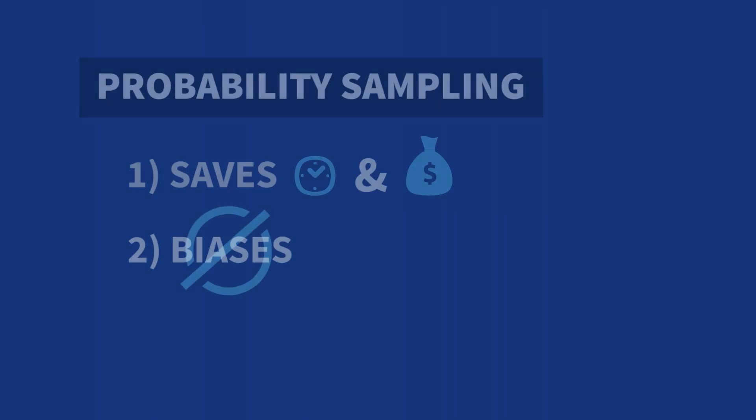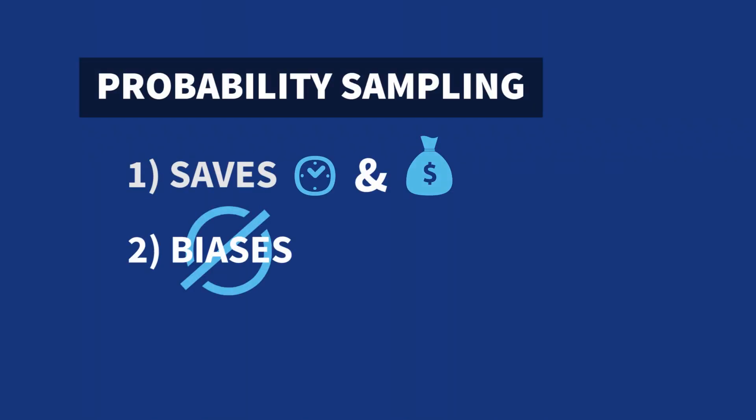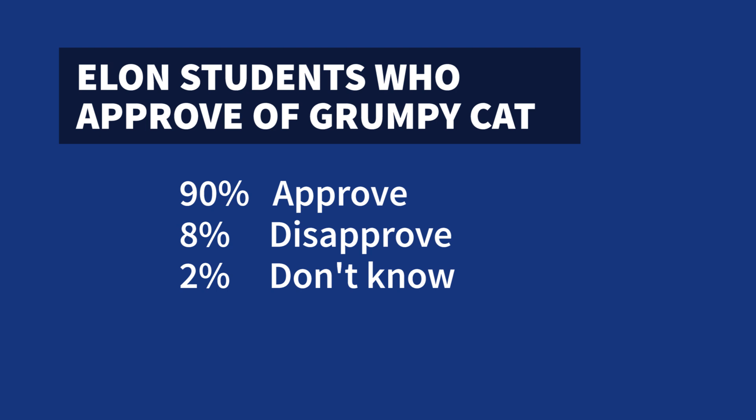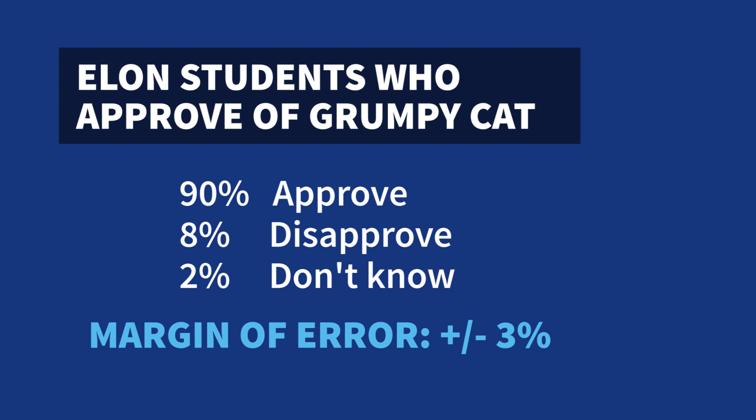And third, probability sampling allows us to calculate confidence intervals and margins of error, which tells us how confident we are about our estimates. I'm sure you've seen some survey report or chart where some percentage is given and then a margin of error is also provided. That margin of error takes into account the fact that the percentage is based on a sample and that we don't have information about the entire population. And that margin of error is only meaningful when you're dealing with probability samples.